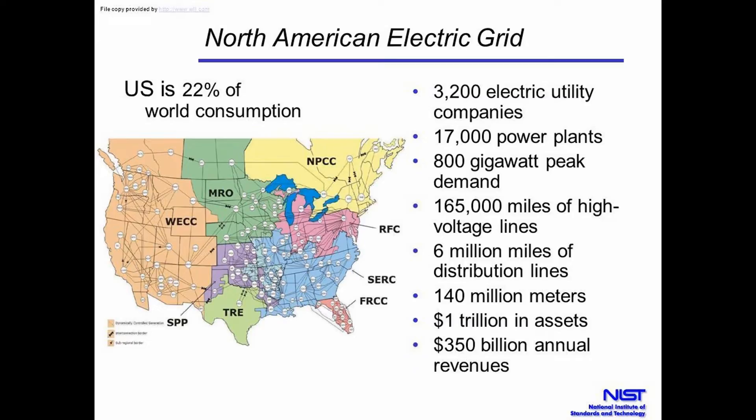The North American grid is enormous. It's divided not really by country but by region, and you can see subdivisions — WECC, MRO, NPC, RFC — those are the different reliability corporations that make sure it's operated reliably and try to prevent major blackouts. Small ones happen, but back in 2003–2004 when the whole Northeast went black, that was a major issue that all regulating organizations aim to prevent. The U.S. accounts for 22% of the world's electricity consumption.